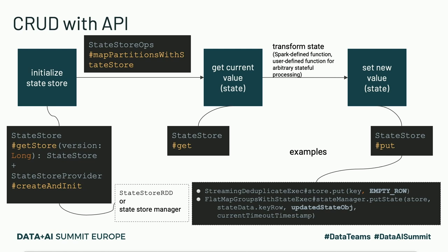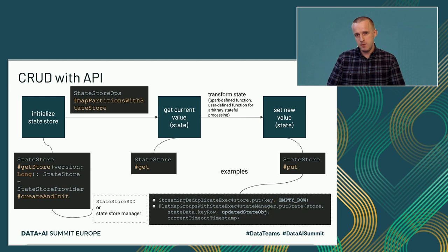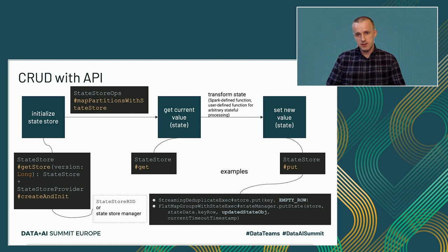Under the hood, everything starts with the mapPartitionsWithStateStore function, which returns a state store RDD. Inside the state store RDD, the state store is initialized with the createAndInit method. It then retrieves the correct version for the given micro-batch or epoch execution in continuous mode. The call to getStore returns the state store backend you use to deal with state. But state store RDD is not the only place interacting with the state store — another one is the state store manager.